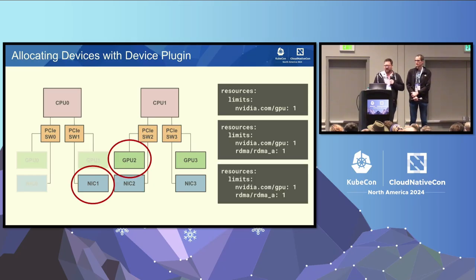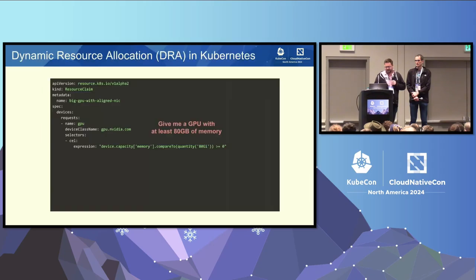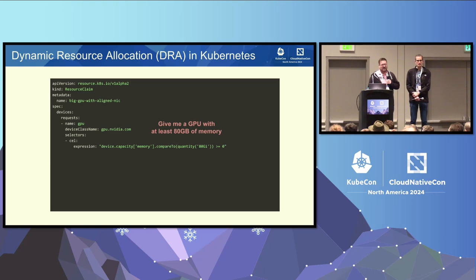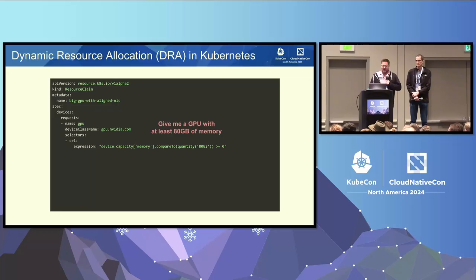This process continues where the next request comes in splitting across the CPU boundary, and performance is likely even worse. So how do we do things with DRA? It's a little more complex on the user API side, but it's a more expressive API. The device plugin approach just uses those counts — extended resources — with no coordination between the two different devices that have been chosen.